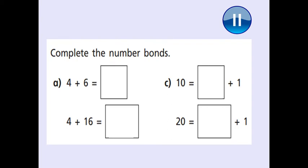Complete the number bonds. All of these number sentences are linked to number bonds. Four add six is a number bond of what? Four add sixteen is a number bond of what? Ten is the same as what number bond — one add something makes ten, what number's going in here? And twenty is equal to what number bond — one add what makes twenty? There are a variety of ways to figure this out: counting objects, number line, or tens frames. Pause the video, give it a go, and we will check in a moment.